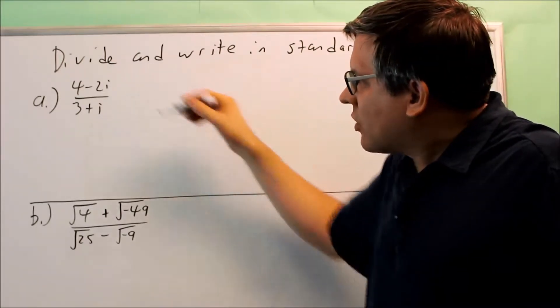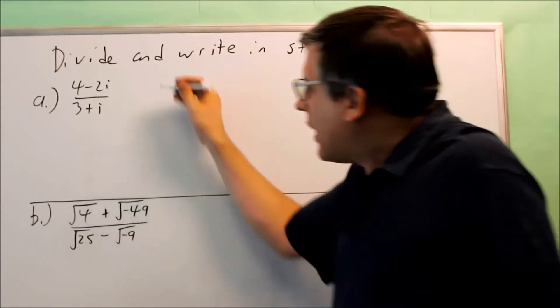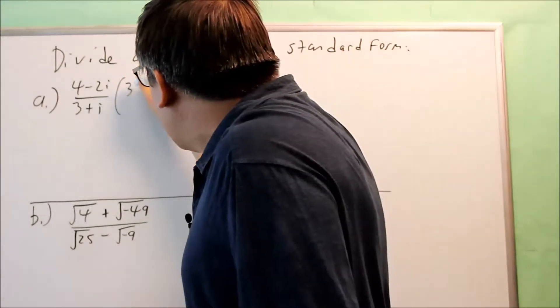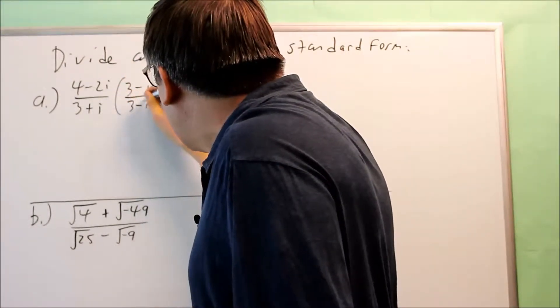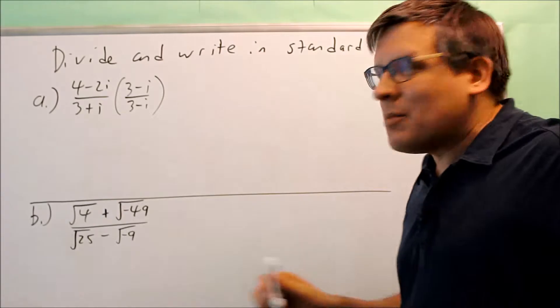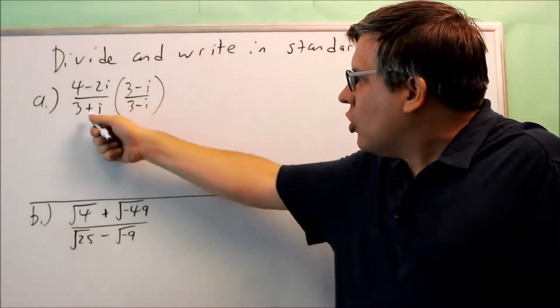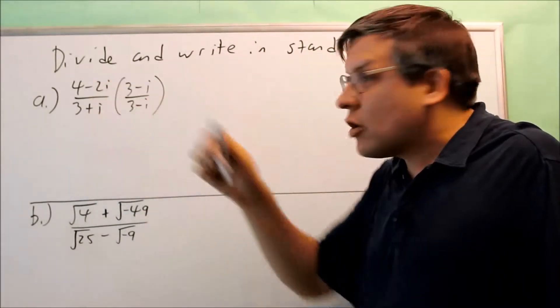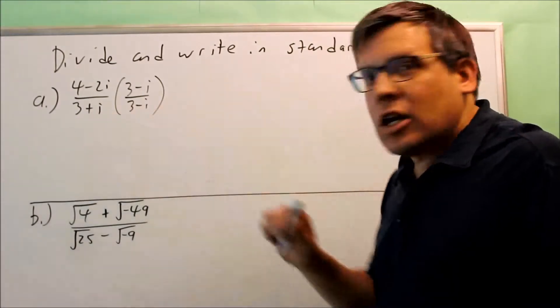So I need to do a process for each of these. The process to get rid of that i is going to be to multiply top and bottom by the conjugate. We're multiplying by the opposite sign of what you see in the bottom. It doesn't matter what the top one is, just the bottom one only.